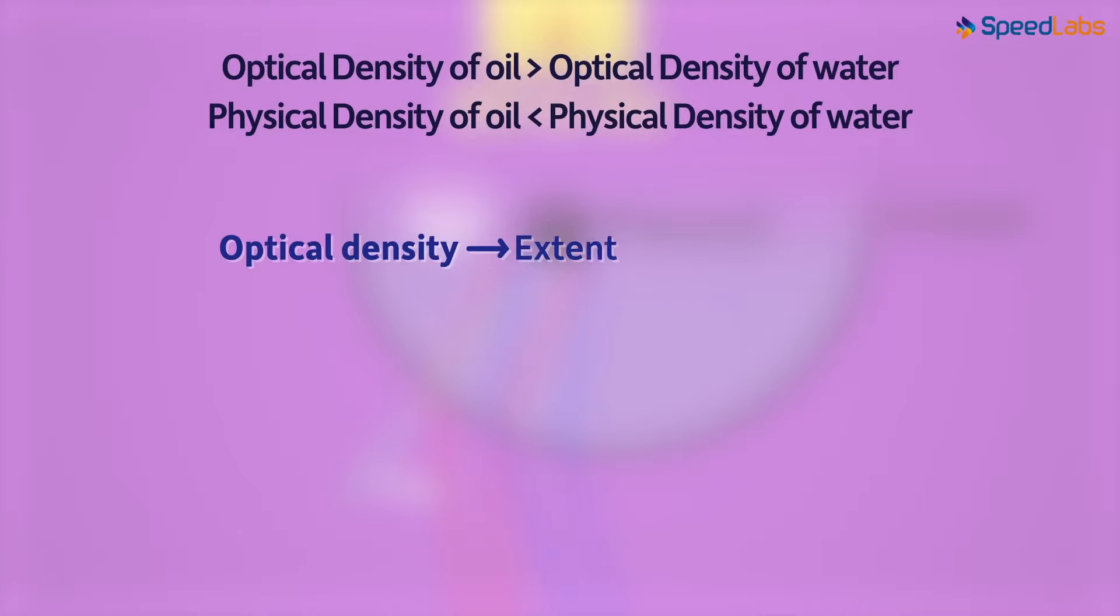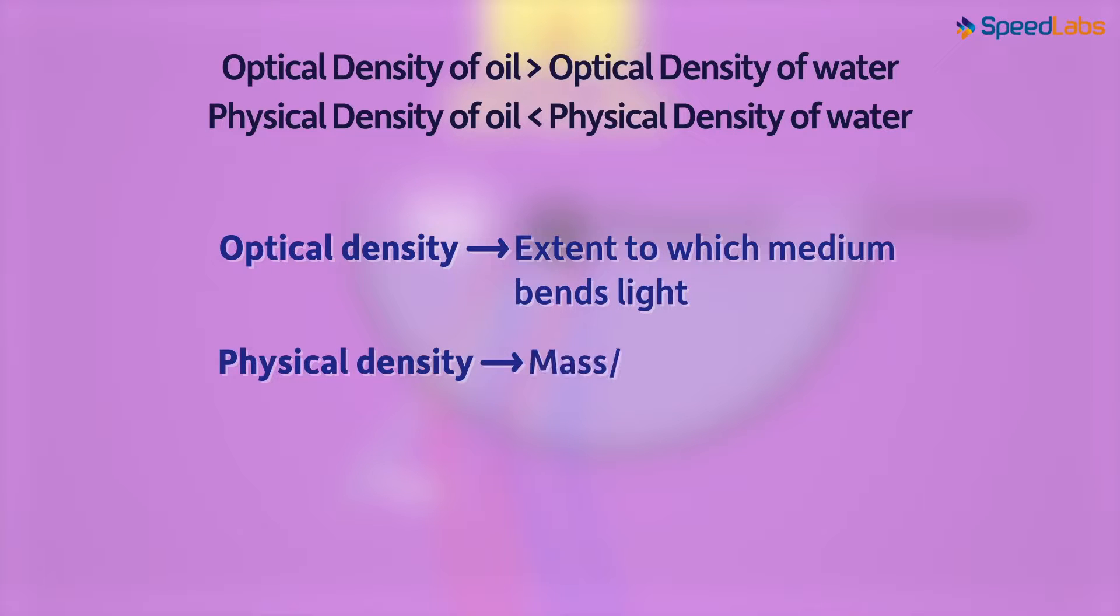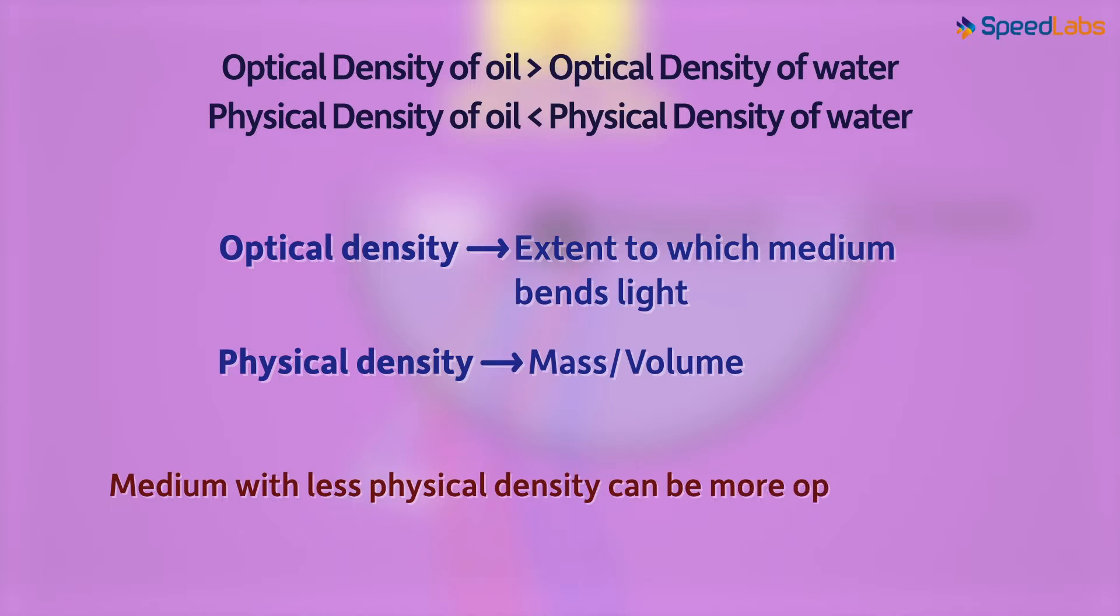Optical density is the extent to which the medium bends the light, whereas physical density is simply the mass over volume ratio. A medium with lesser physical density in comparison to another medium can be optically denser than the other and vice versa.